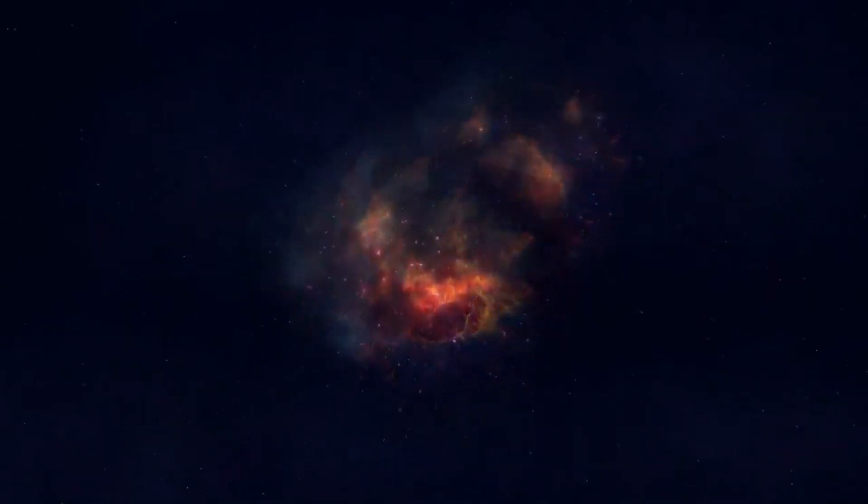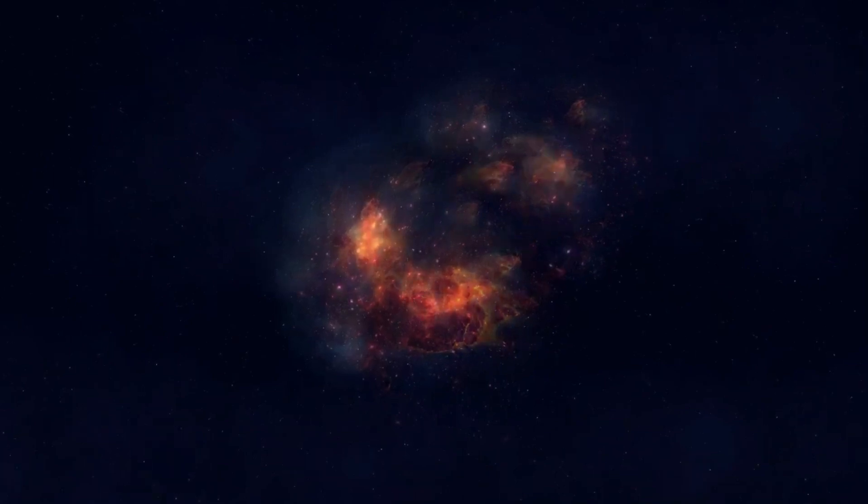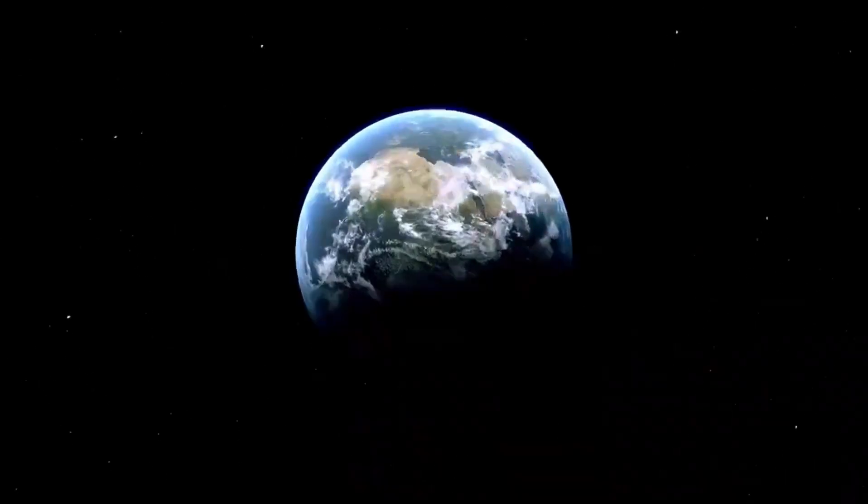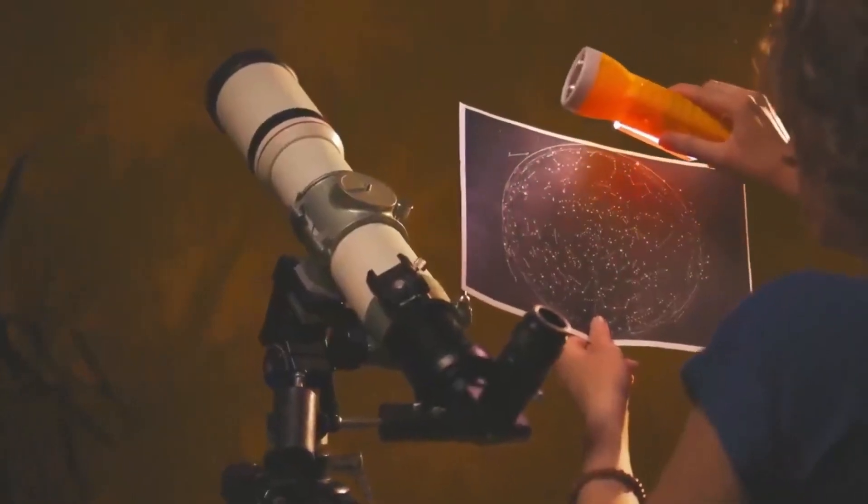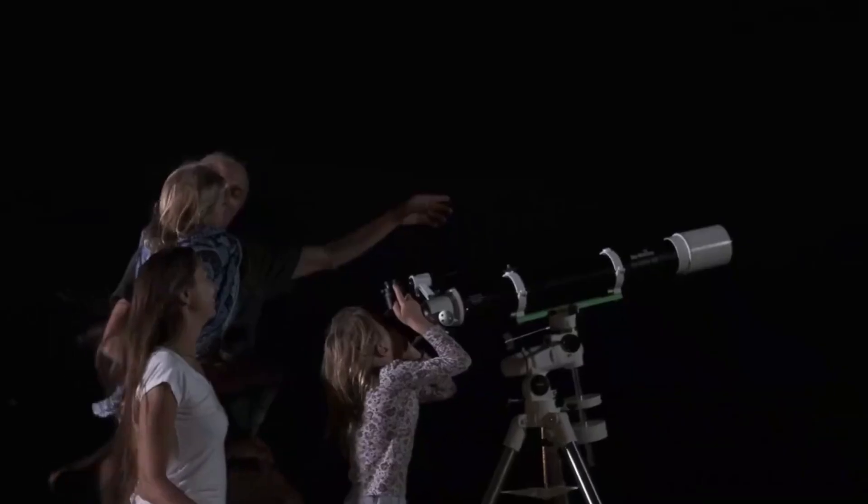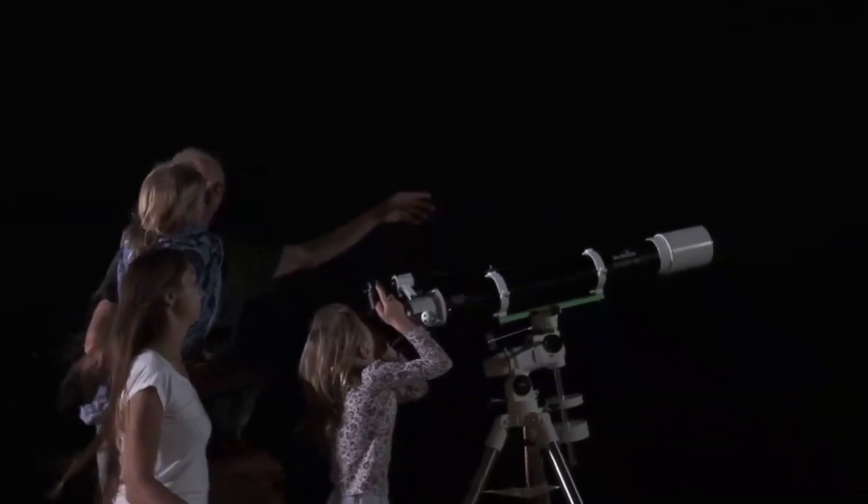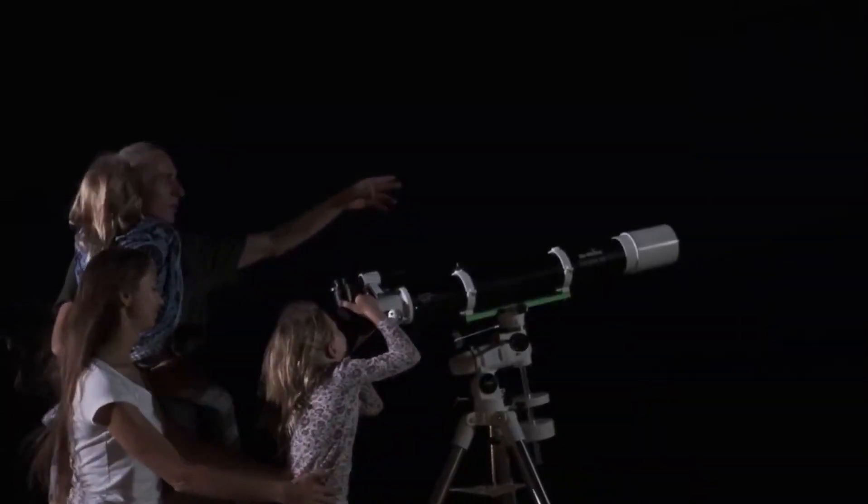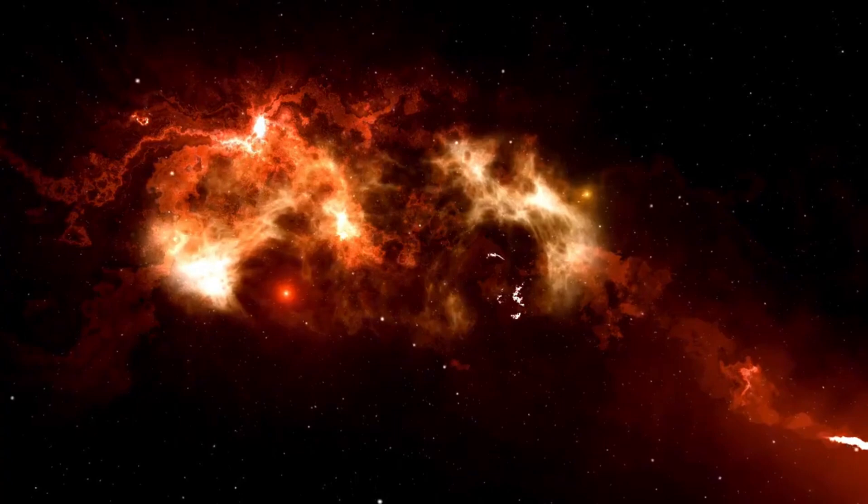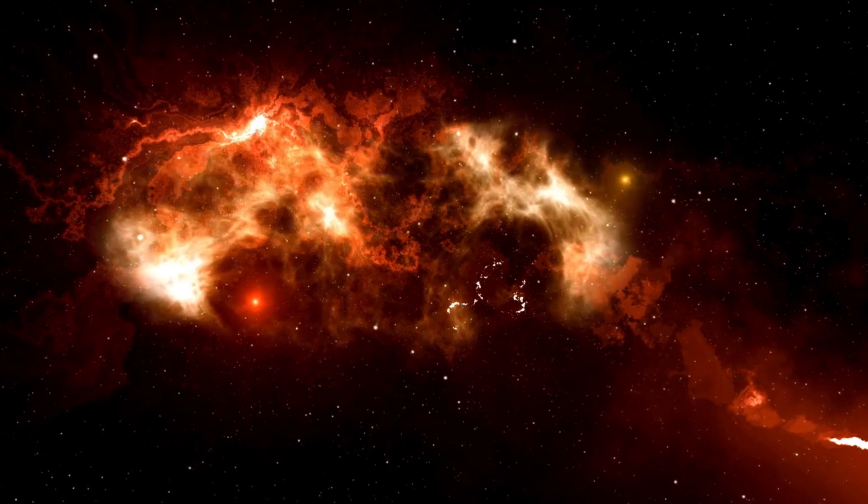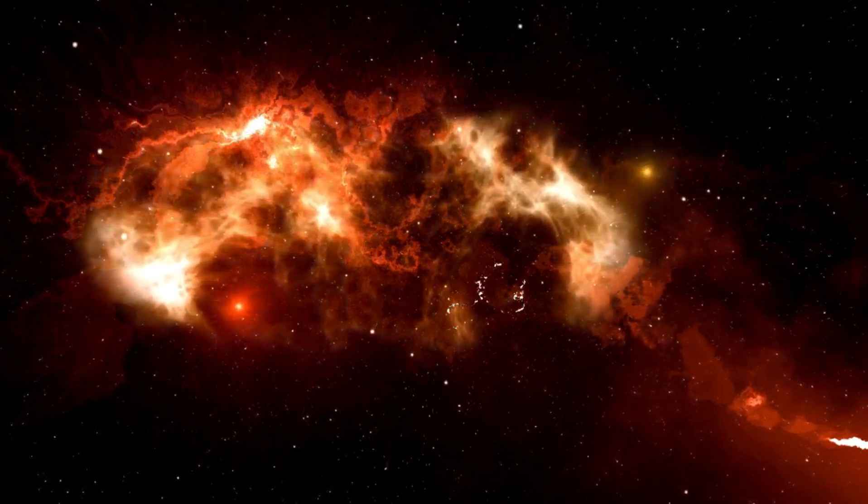But the supernova of Betelgeuse would not be without risks. While the star is far enough away that the explosion would not pose a direct threat to Earth, the intense radiation and cosmic rays emitted by the supernova could have an impact on our planet's atmosphere. Some scientists have speculated that a nearby supernova could deplete the ozone layer, increasing the amount of harmful ultraviolet radiation reaching the Earth's surface. However, the likelihood of such an event is low, and the scientific community is more focused on the potential benefits of observing a supernova up close.